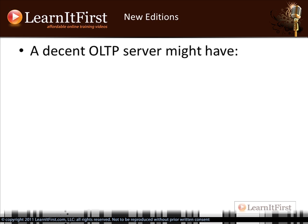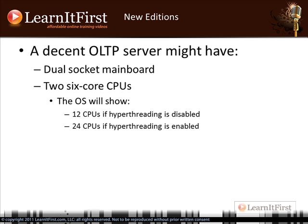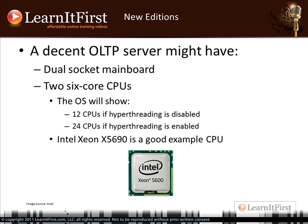Let's take a sample OLTP server — a fairly decent server that wouldn't handle super high-powered stuff but would be a solid system. You'd have a dual-socket motherboard to put two CPUs in. You'd go buy two six-core CPUs. When you boot the OS, it's going to show 12 CPUs with hyper-threading disabled, or 24 CPUs with hyper-threading on. For example, the Intel Xeon X5690 is a great CPU for OLTP applications. With two of those, you'd have a killer little OLTP system — able to run 100-gig databases with 600 to 800 connections.